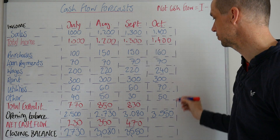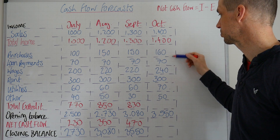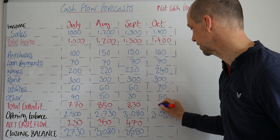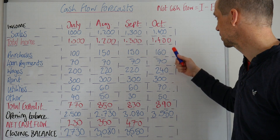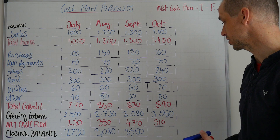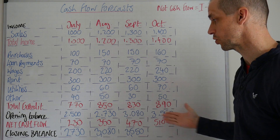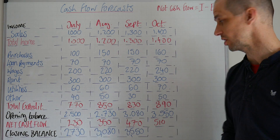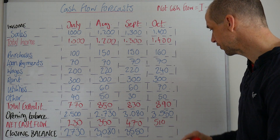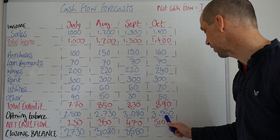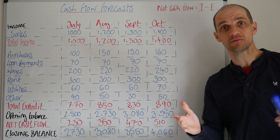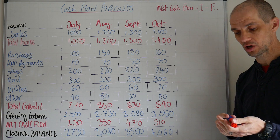That 3550 becomes the opening balance for the following month. For month four, total income is 1400 pounds and total expenditure is 230, 470, 770, 840, 890 — so 890 pounds. Net cash flow is 510 pounds, our strongest month yet. Income is the highest so far and this business is growing quite nicely. Adding 510 brings us up to 4060 pounds closing balance.